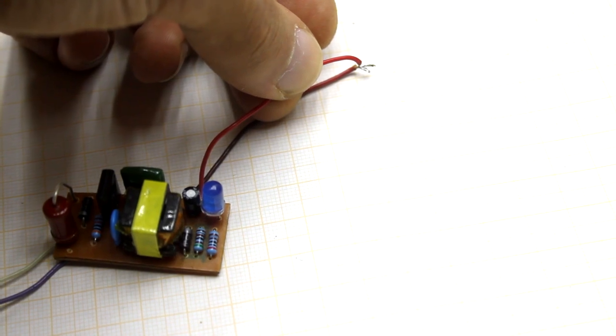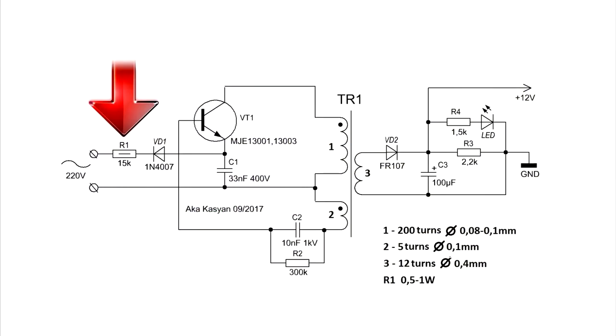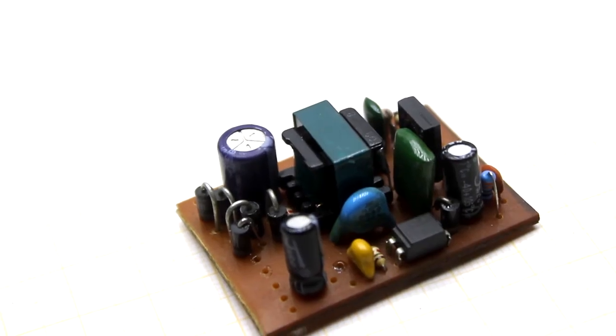All the excess is dissipated on the resistor in the form of heat, so the unit can have short circuit even for a long time. Such a solution naturally reduces the efficiency of the power supply as a whole, but it makes it literally non-destructive, unlike the chargers for mobile phones.